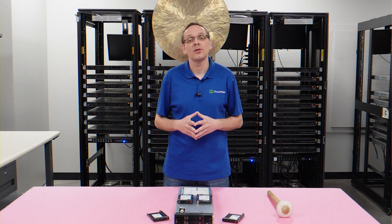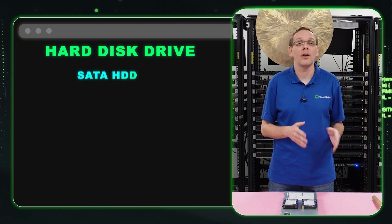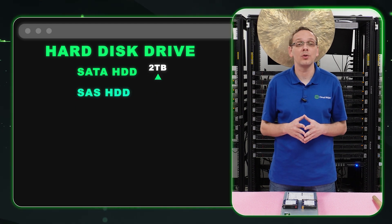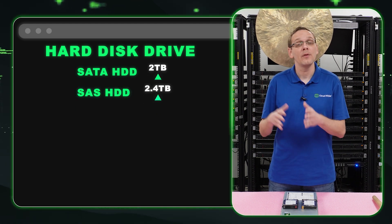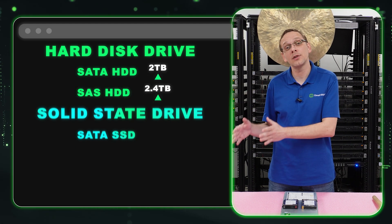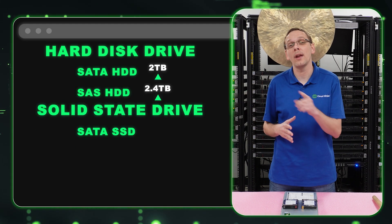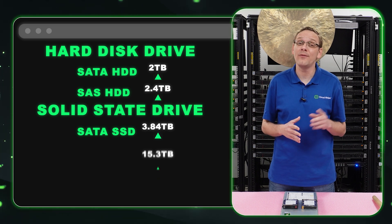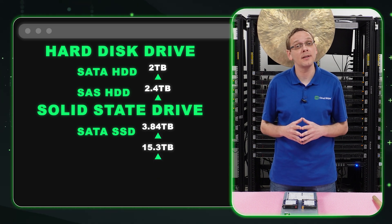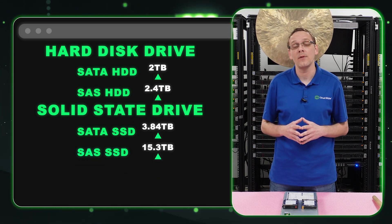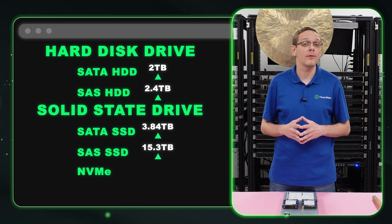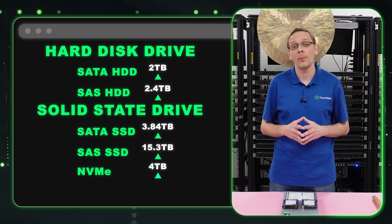Let's talk about the different sizes. For a SATA hard drive you're going to get 2 terabytes. For a SAS hard drive you're going to get 2.4 terabytes. For a SATA solid state drive it's 3.84 terabytes. It's going to be 15.3 terabytes for a SAS solid state drive, and for NVMe you're going to get 4 terabytes.